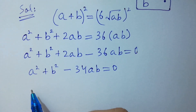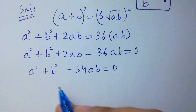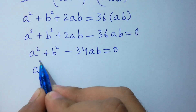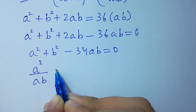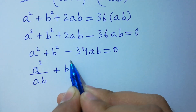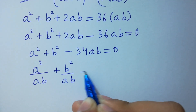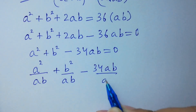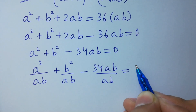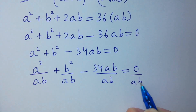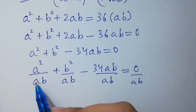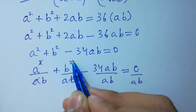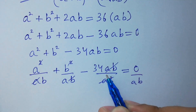Now we can easily divide the entire equation by ab: a squared over ab plus b squared over ab minus 34ab over ab equals 0. Here, ab cancels in each term — a squared over ab simplifies, b squared over ab simplifies, and 34ab over ab cancels.